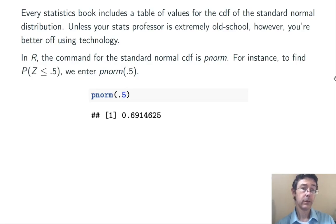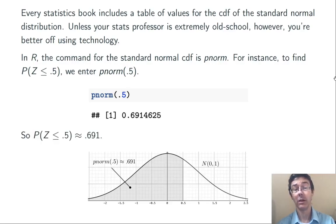So, for instance, to find the probability of getting a z-score less than or equal to 0.5 at random, we just enter pnorm(0.5). And, in this case, we get 0.691. So, that shaded area is about 0.691. The probability of getting a z-score less than or equal to 0.5 at random is about 69.1%.